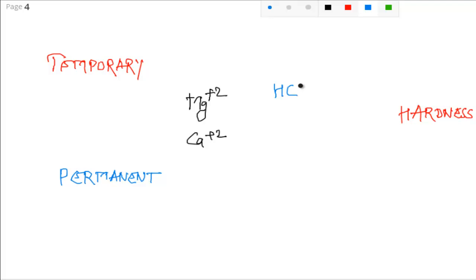Bicarbonate, chlorides, and sulphates. So which one is temporary hardness?